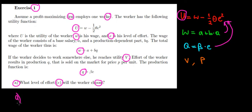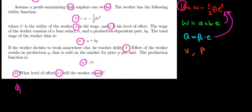Let's do it. The utility is equal to the wage, which is a plus B times the quantity.